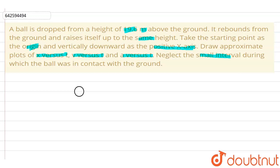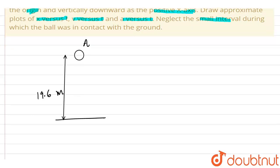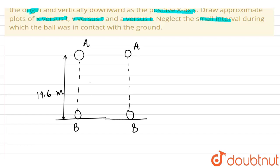The ball is dropped from point A which is 19.6 meters above the ground. During the whole journey, when the ball reaches point A again, it covers the path A to B and then from B to A. During this journey, the acceleration is acting downwards at 9.8 meters per second squared due to earth's pull.